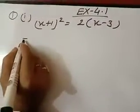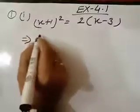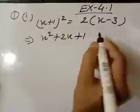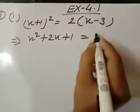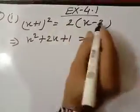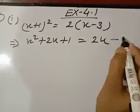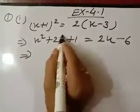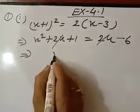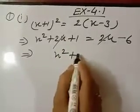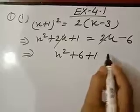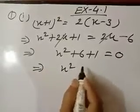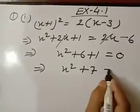Solve: x plus 1 whole square — using the identity (a+b)² — gives x squared plus 2x plus 1, which equals 2 into x, that is 2x, and 2 into minus 3, that is minus 6. The 2x cancels from both sides, giving x squared plus 6 plus 1 equals 0, or x squared plus 7 equals 0.